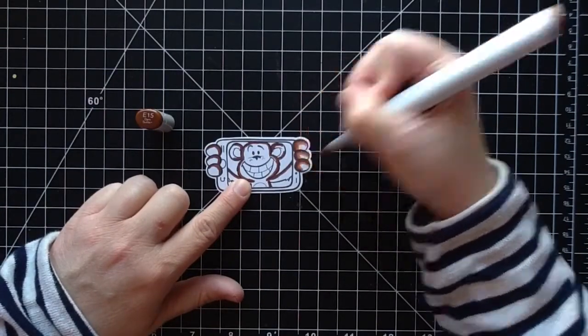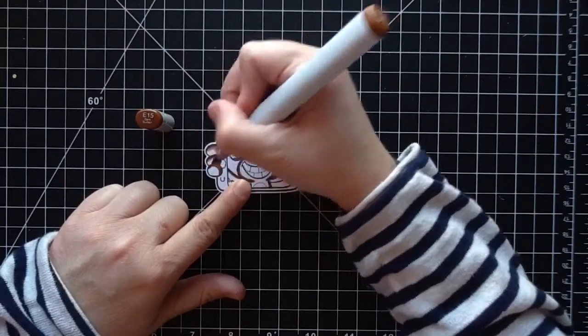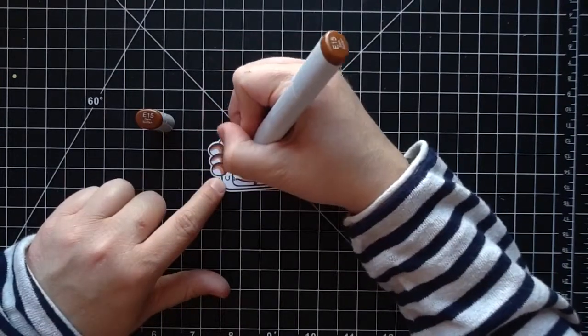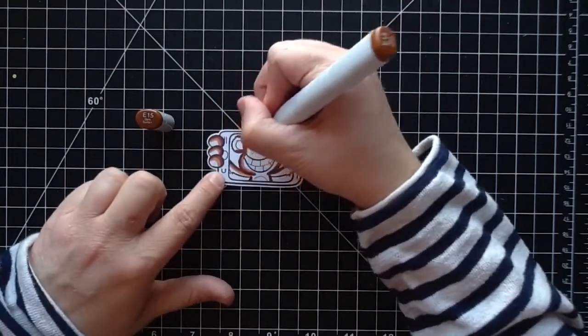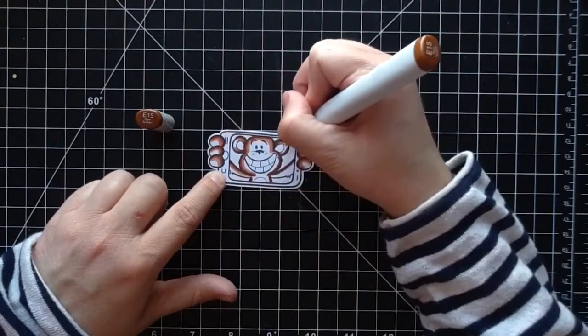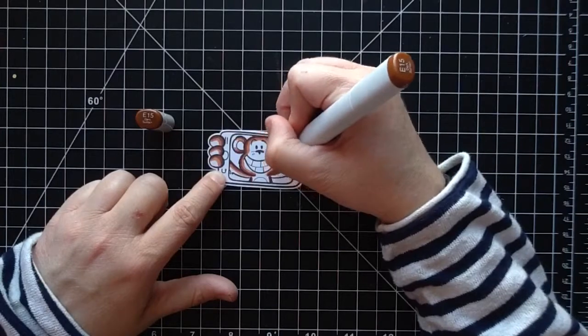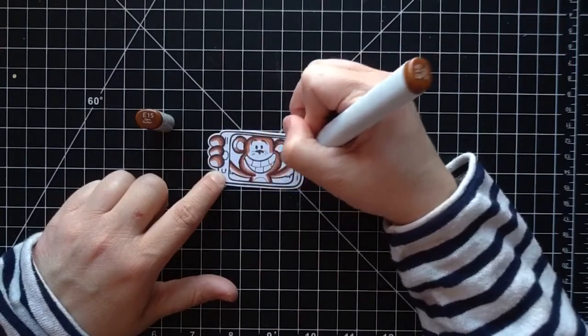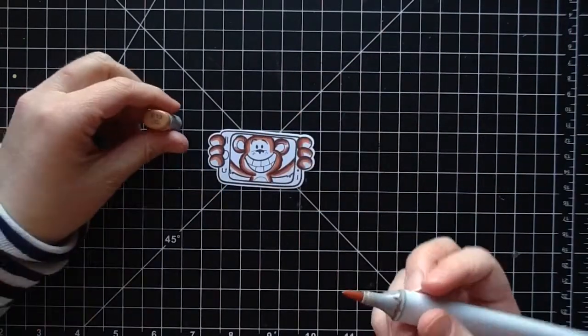Then I'm going to go in with my next color, E15. This was such a fun image to color, and I can't wait to do it in a whole bunch more colors. I think it'd be really cute to have these on birthday cards, and I just love how this could be used for any occasion. You could literally use this for a Christmas card.